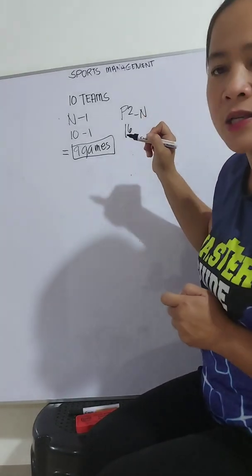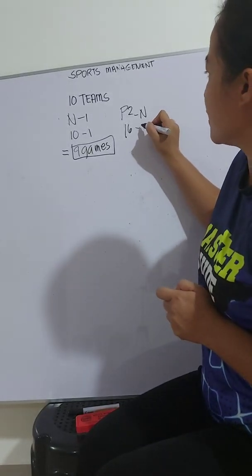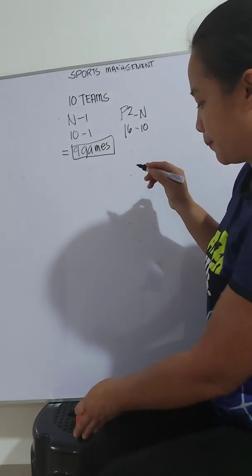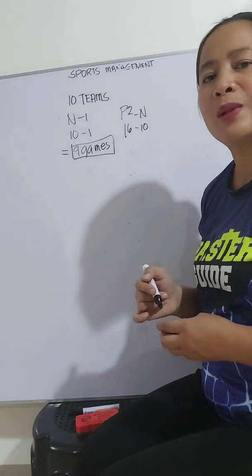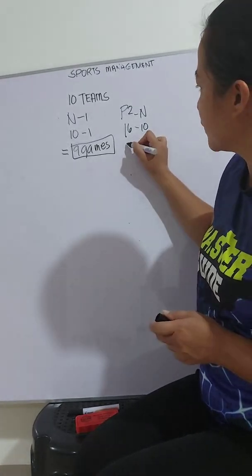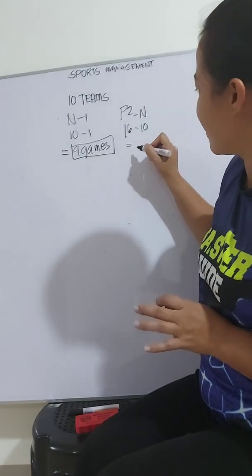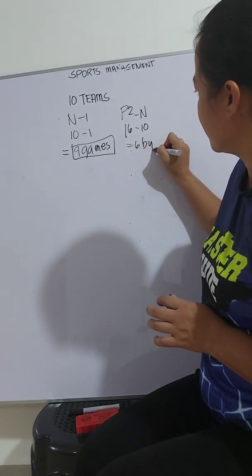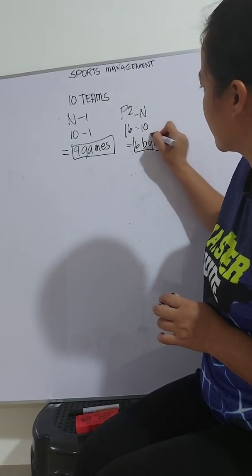So we'll be using 16 minus 10. After which, we will subtract 16 minus 10. So we have 6 byes.